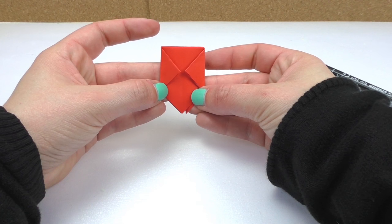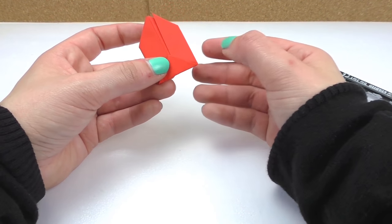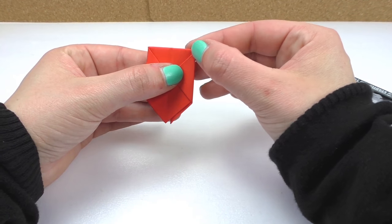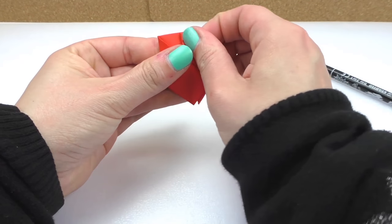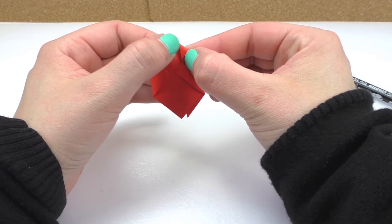We're going to do the same with the other side. And this is how it looks from the front with the wings and from the back. So now these two corners we're going to fold them one more time, but not all the way to the middle. Just a little bit. See? And we'll do the same with the other one.